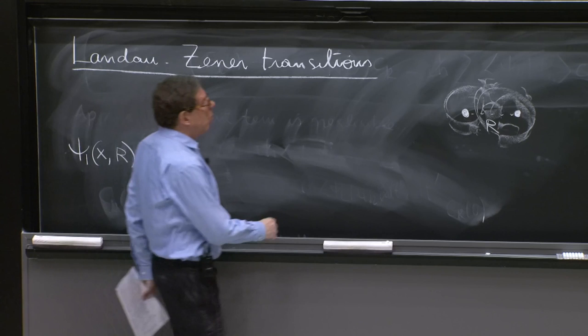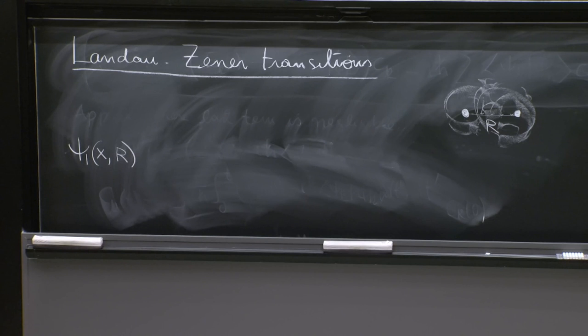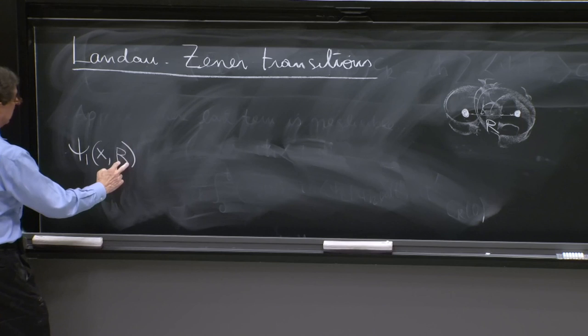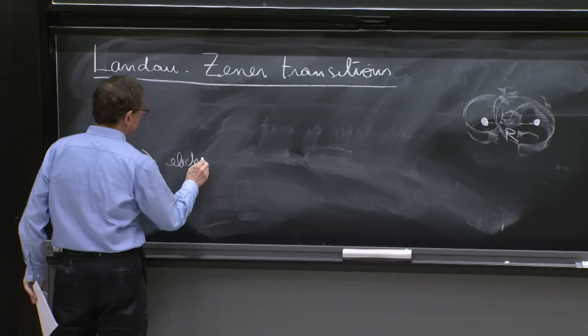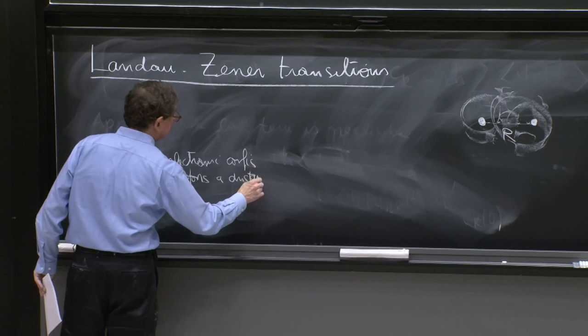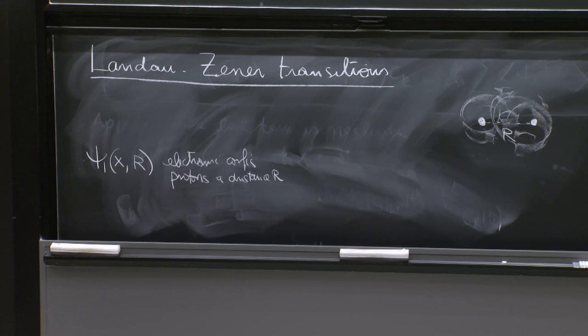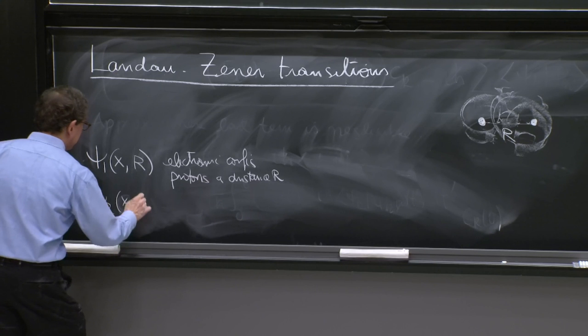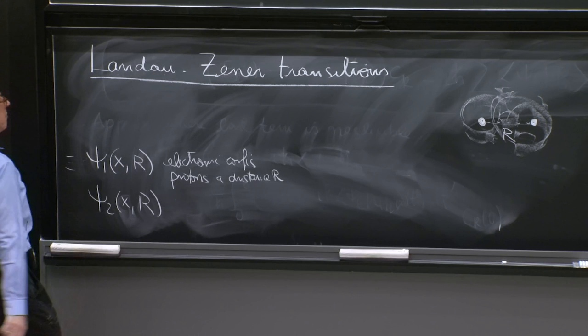So Zener imagined that you would have ψ₁, one electronic configuration. It's a wave function that depends on some x's for the electrons. But it represents the situation where the two protons, for a simple molecule, are separated by a distance r. So that's an electronic configuration. And suppose there's another configuration, ψ₂ of r. Two configurations, two different states.